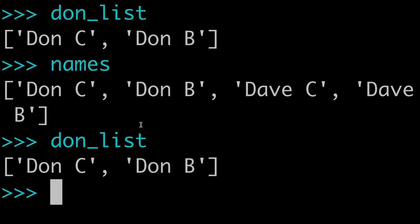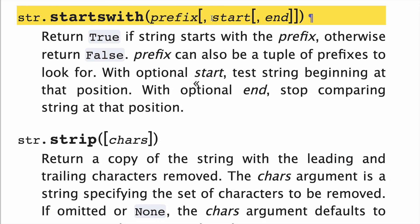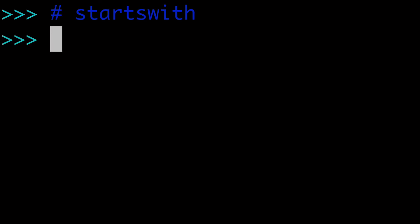So in this video, we gave some practical examples. We looked at prefixes as both a string and a tuple. We looked at slice notation with start and end. We looked at a real-world example. This has been the startsWith string method — I hope you enjoyed this video, learned something, and I hope to see you in the next one. Thanks so much for watching.